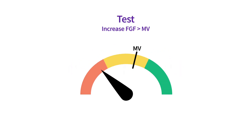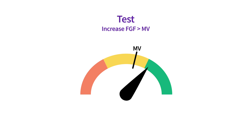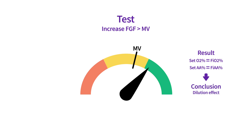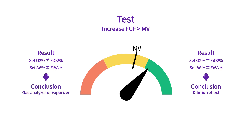No time for math? Briefly increase the fresh gas flow to meet or exceed the patient's minute volume. The inspired concentrations should increase close to the set concentrations, which determines if the anesthetic agent and oxygen measurements are affected by the dilution effect. If the set concentrations of anesthetic agent or oxygen do not increase close to the set concentrations, then there could be an issue with your gas analyzer or vaporizer.